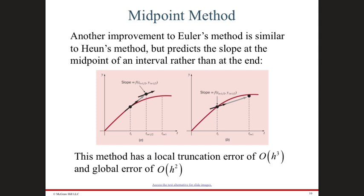Similar to Heun's method, there is something called the midpoint method. In this case, you get the slope in the middle between two points. Rather than using the start slope or the end slope, you use the midpoint slope — the slope at the current value plus h over 2. So instead of the slope at t or at t plus h, you get it at t plus h over 2, and calculate the right-hand side of the ODE at that midpoint.